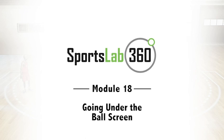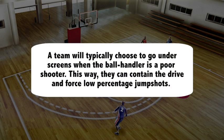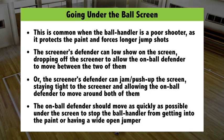Welcome to Module 18: Going Under the Ball Screen. A team will typically choose to go under screens when the ball handler is a poor shooter. This way, they can contain the drive and force low percentage jump shots. Here are some key points to think about when going under a ball screen.